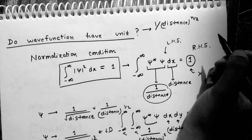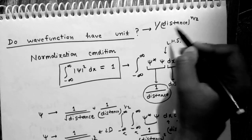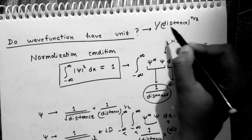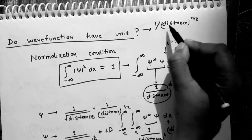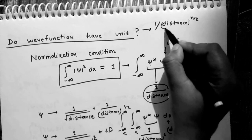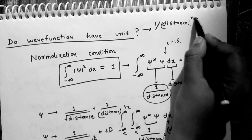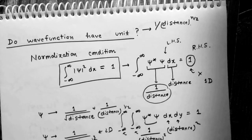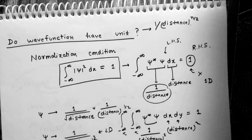If the wave function is in momentum space, then the unit will be 1/momentum^(n/2). I hope this video will be helpful for you. If you like it, please like, share, and subscribe to our channel.